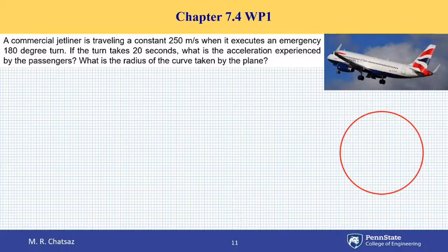I erase half of it to show the path of the plane as it turns 180 degrees. Because it is traveling at a constant speed of 250 meters per second, constant speed implies that tangential acceleration is zero.